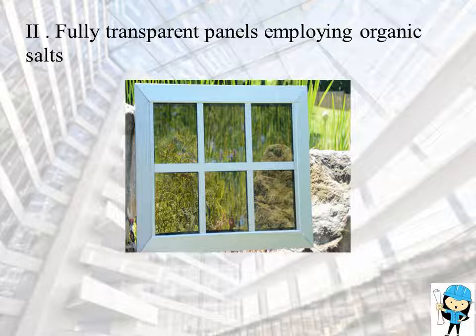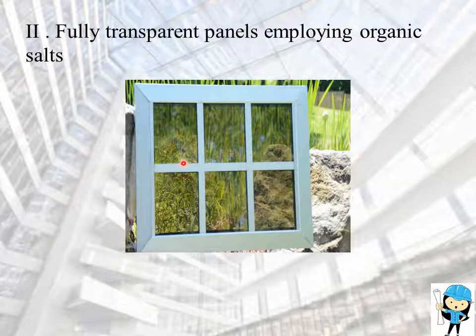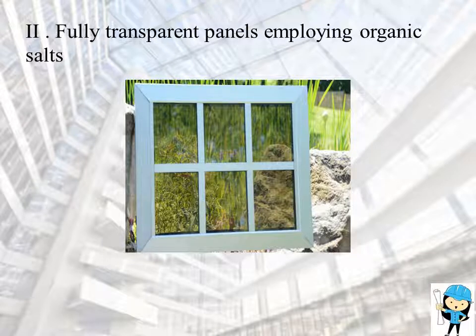The next solution for the above-mentioned problem is fully transparent panels employing organic salt, used for clear windows and touch screens. This is the image of a clear window made up of fully transparent panels employing organic salt. Fully transparent solar panels cannot absorb fully transparent light, but the organic salt in them absorbs specific invisible wavelengths of light such as UV rays and NIR rays. This light is then transformed and the material of the panel moves it to the edges where strips of photovoltaic solar cells convert them into electricity. These strips of photovoltaic solar cells are placed at a particular angle for their conversion.